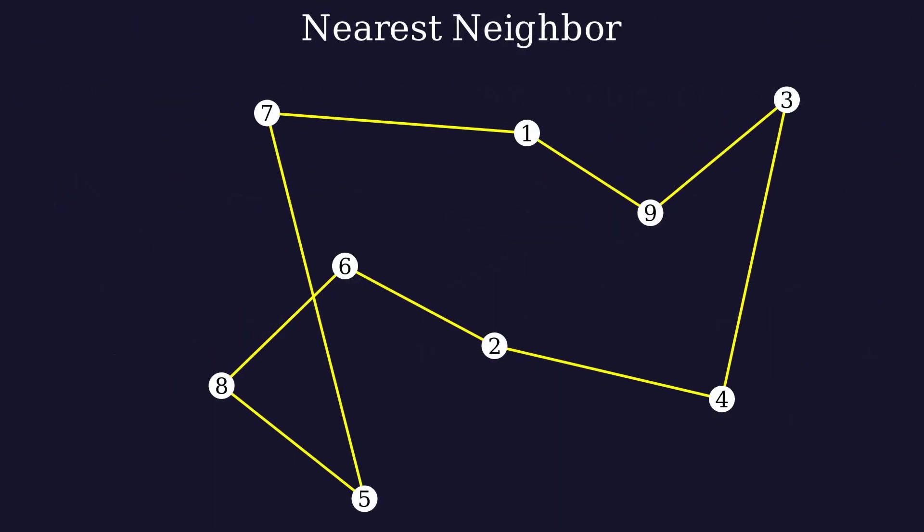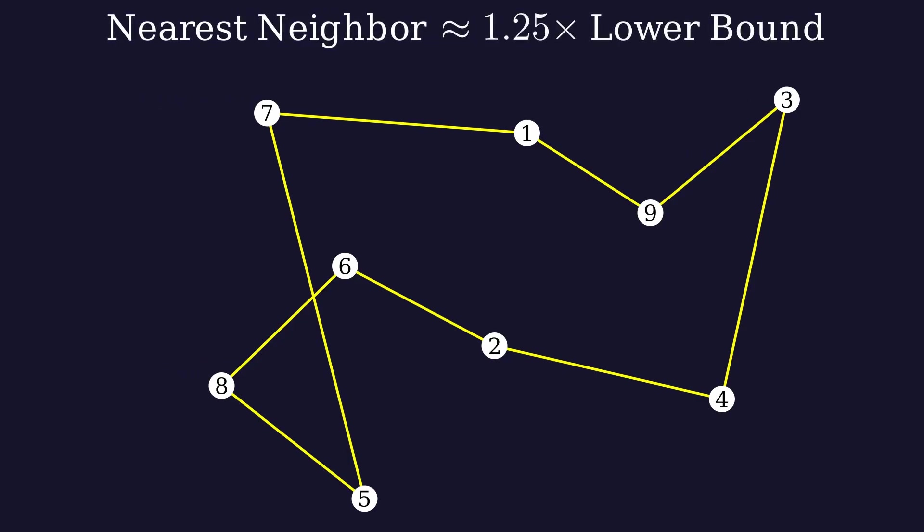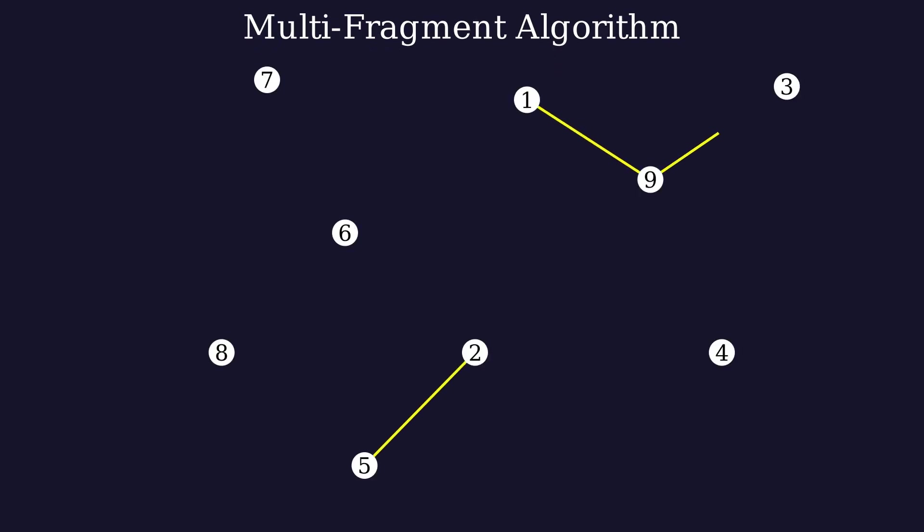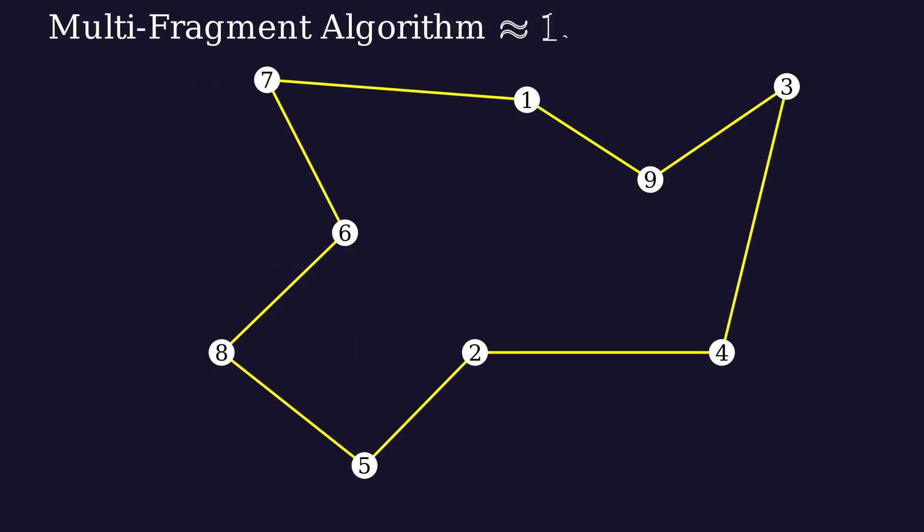On average, the nearest neighbor algorithm creates a path that's around 25% longer than the lower bound. A more improved version of this approach is called a multi-fragment algorithm. This algorithm tries to connect any two nodes that would create the shortest edge. However, if one of the nodes is already connected to two other nodes or the edge would create a loop that doesn't include all the cities, we reject an edge. The multi-fragment algorithm on average results in a path that's approximately 17% longer than the lower bound.